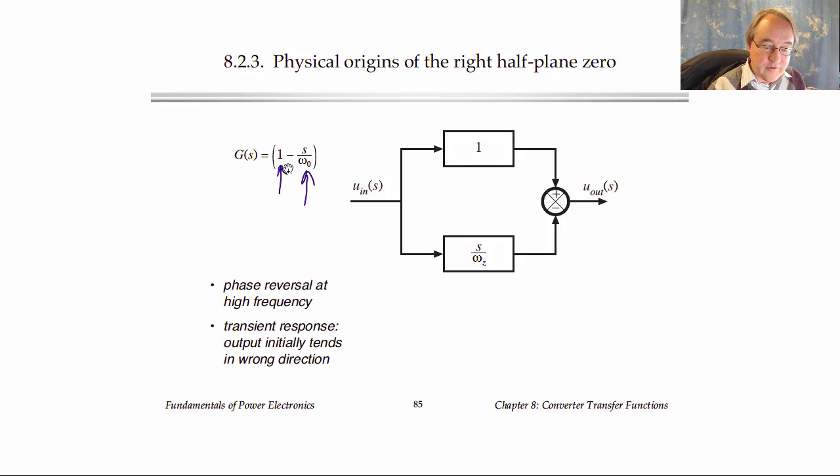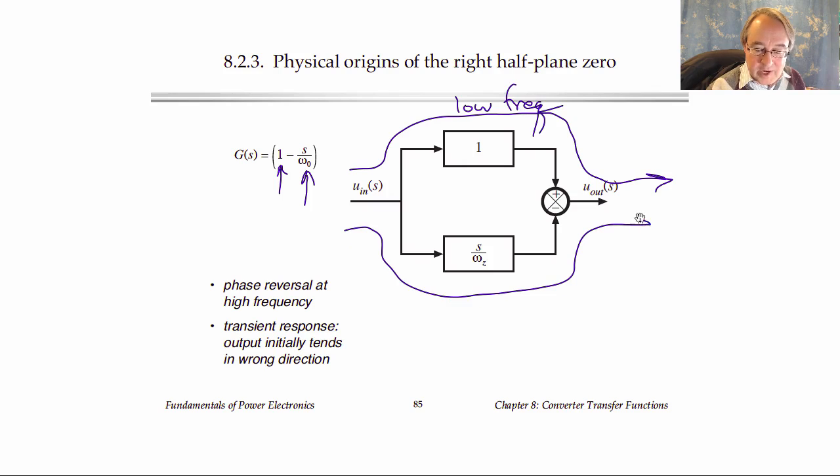In a block diagram form, one way to view this transfer function is that we have a low frequency path this way that has a gain of plus one, whereas at high frequency, this path dominates, and it has the s over omega-z term, and it has the minus sign right there.